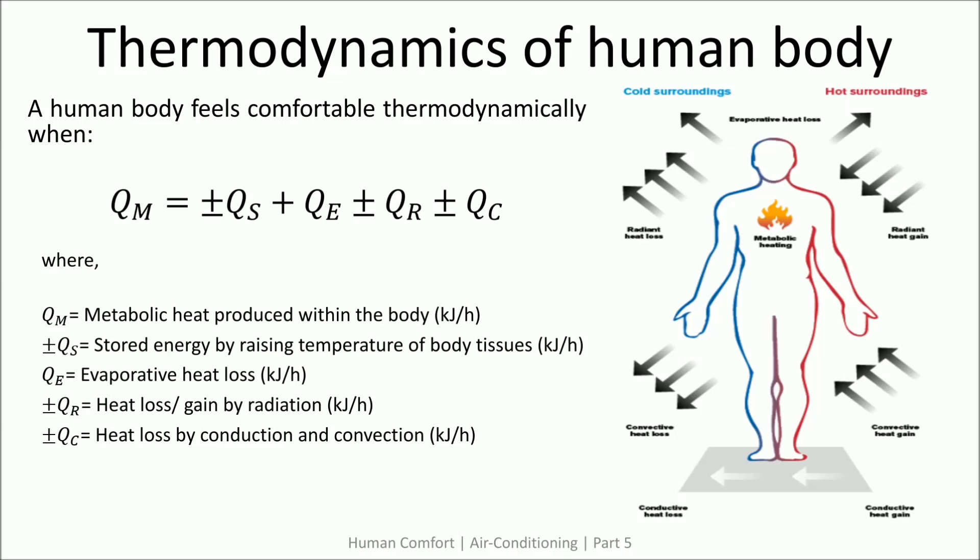When this equation is not satisfied, the body temperature may rise or fall from its normal or neutral condition. For example, while fasting, our metabolic rate drops. In this condition, if we are exposed to a cold environment or high draft air, we would feel colder than usual because QS drops due to low metabolic rate and also the values of QR and QC are high in the given conditions.